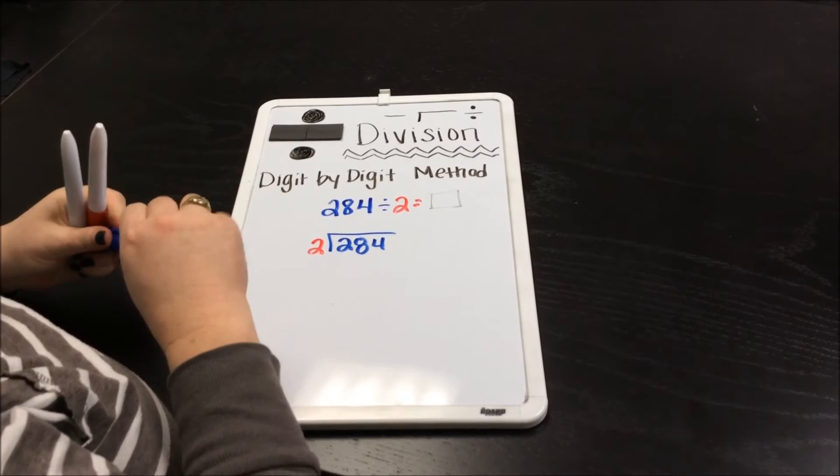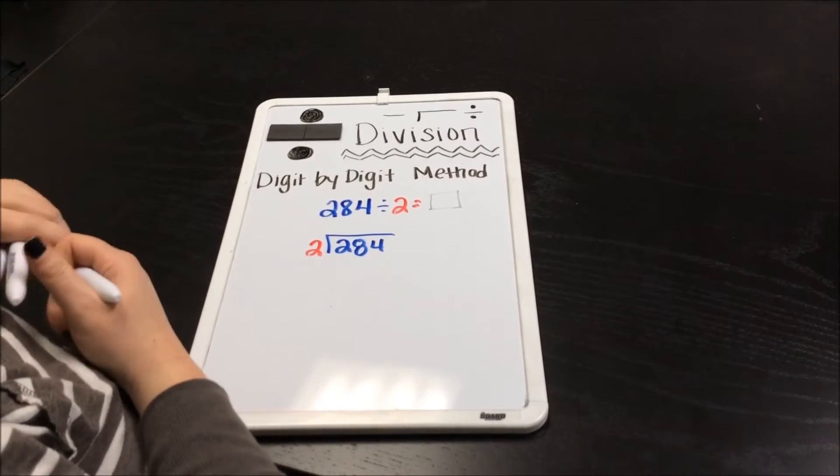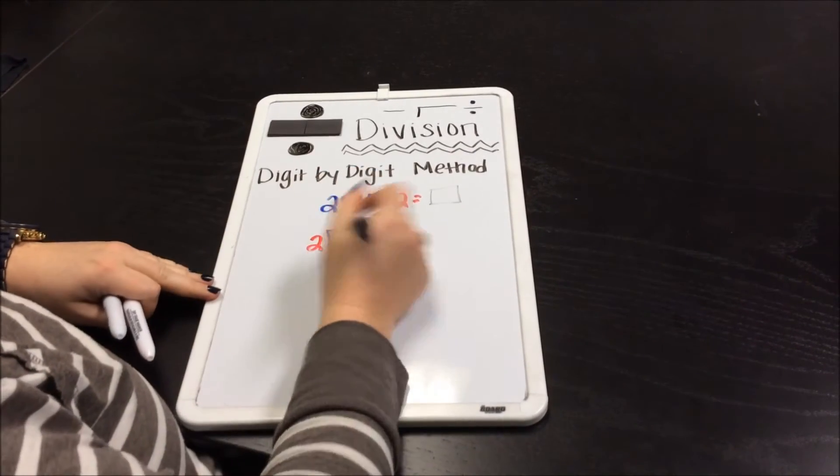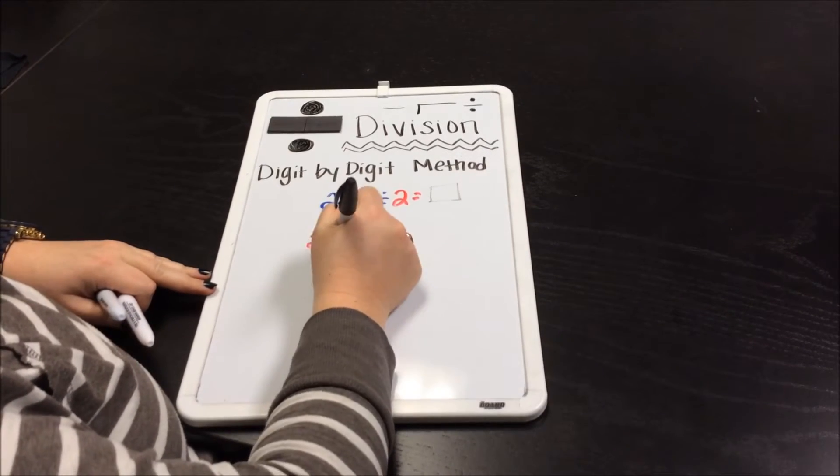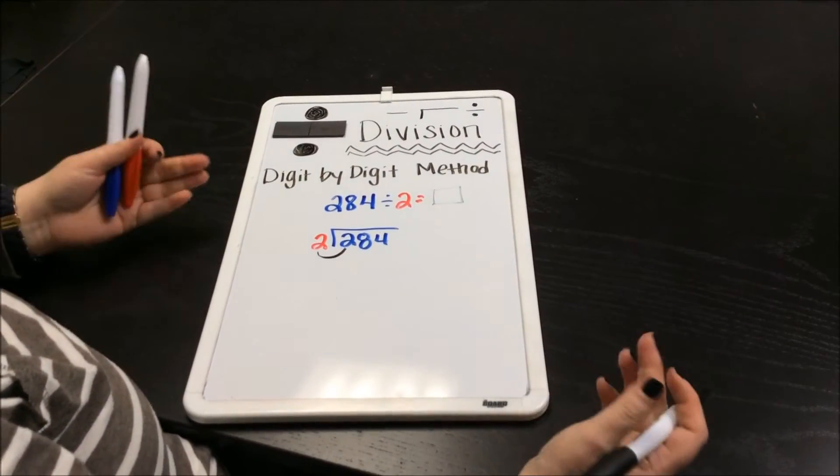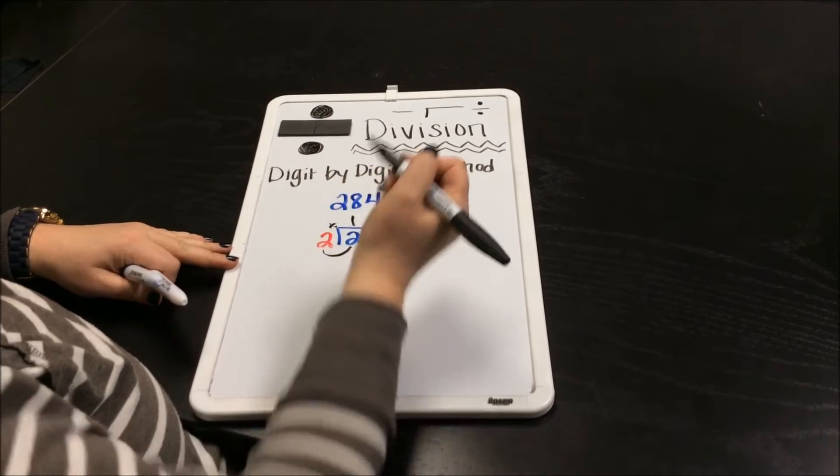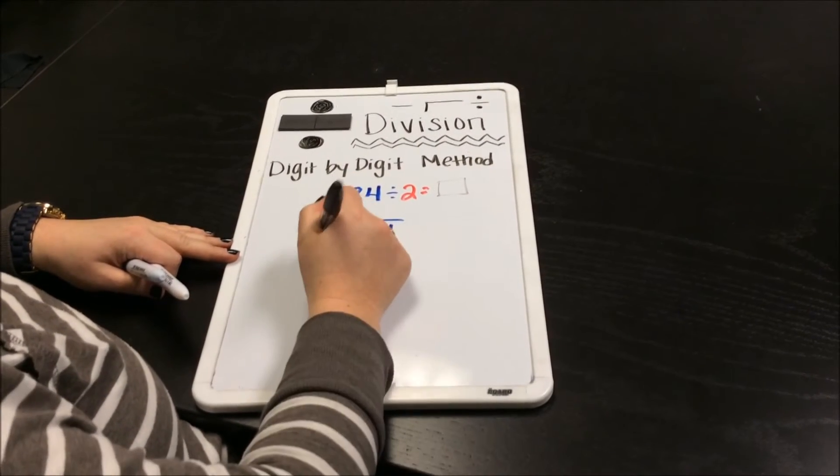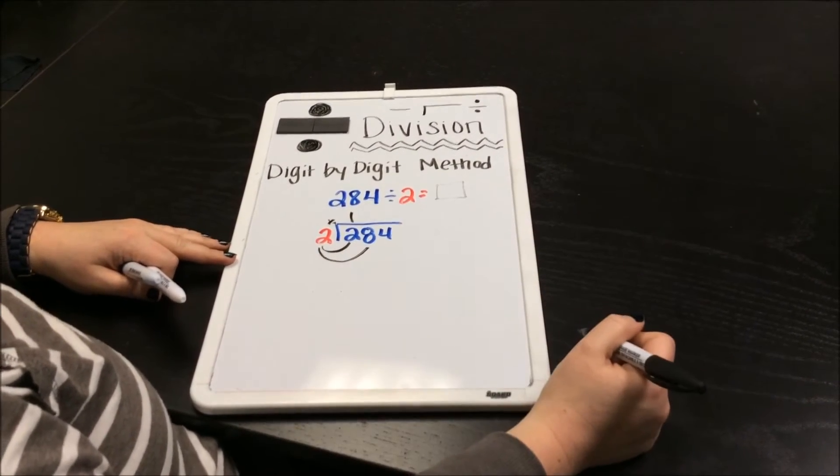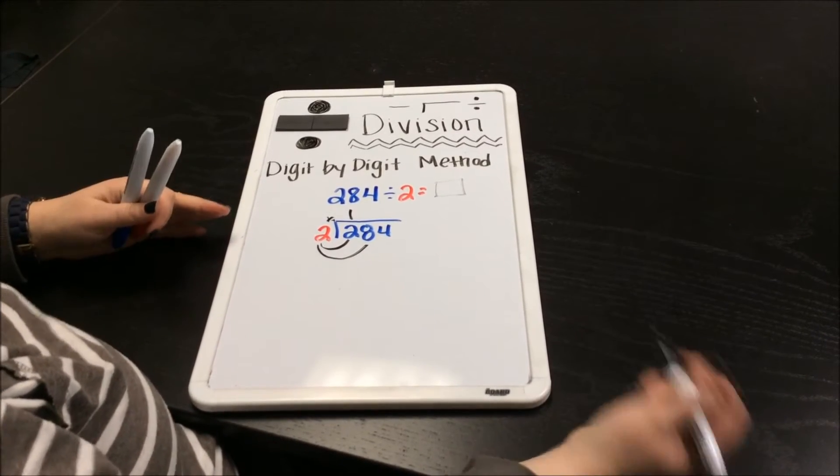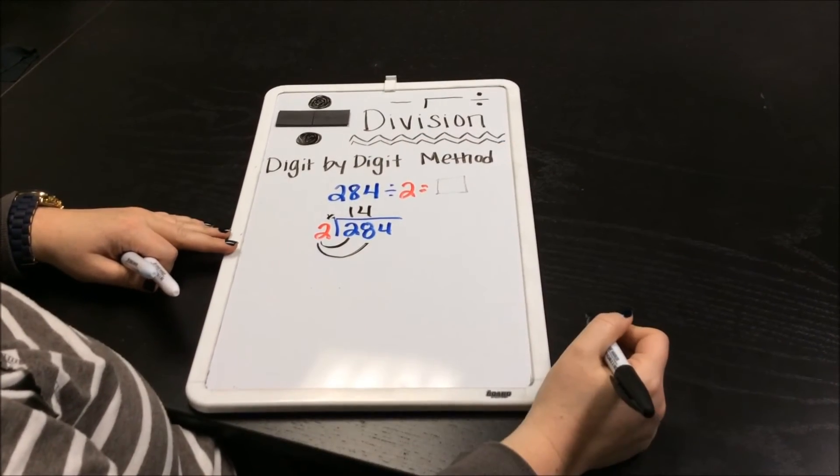Basically, what we're going to be looking at is every digit, seeing how many times 2 can go into each one. 2 can go into 2—we know that 2 times 1 equals 2. Going to the next digit, 2 times what gets you 8? We know 2 times 4 gets you 8.